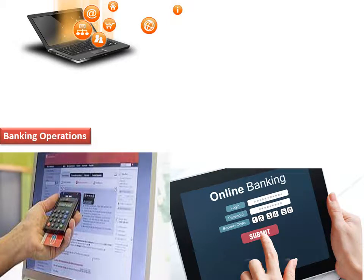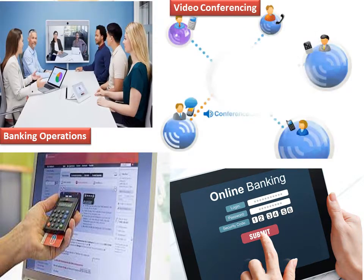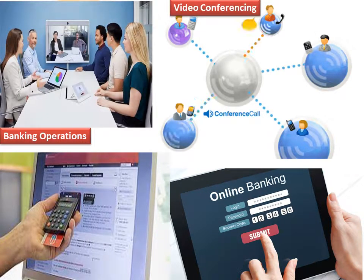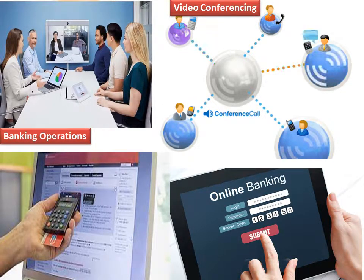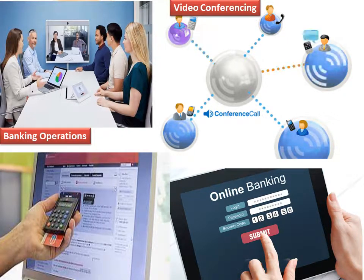Video Conferencing: Through video conferencing, you can communicate with another person both verbally and visually, even from locations that are geographically apart. For video conferencing, the communicating parties need to have a display screen, web cameras, speakers and microphones.